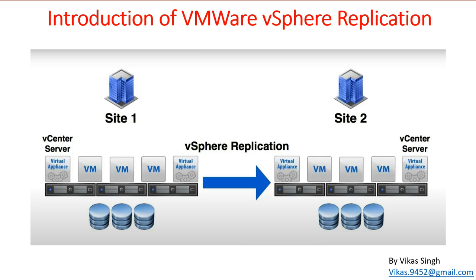The first thing required for disaster recovery using a VMware product is vSphere Replication, and the second thing you can set up is SRM. VMware vSphere Replication is a virtual appliance which enables you to replicate your virtual machines from one vCenter infrastructure to another — whether in the same data center, a different city, or a different country. In this playlist, we will cover vSphere Replication first and then introduce VMware Site Recovery Manager, so this tutorial is a combination of both.